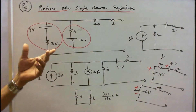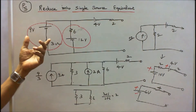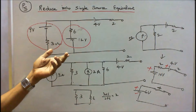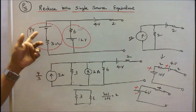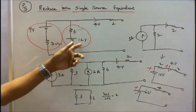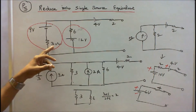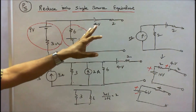Problem number 5. Here 3 batteries and 3 resistors are connected as shown in the figure. This is 9 volts, this is 12 volts, this is 4 volts. This is 2 volts and 2 amps. The 3 resistors are 3 ohm, 6 ohm, and 2 ohm.